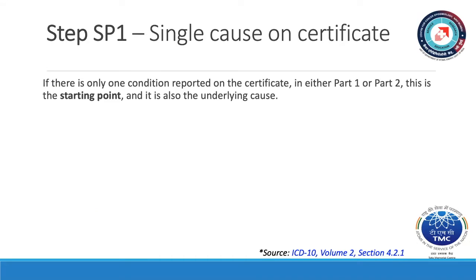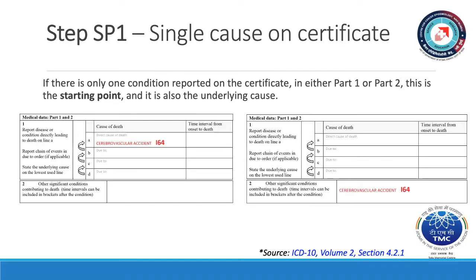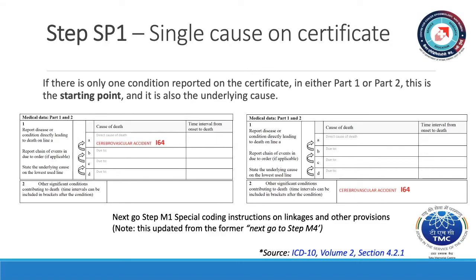Let's start with step SP1: Single Cause on Certificate. If there is only one condition reported on the certificate in either Part 1 or Part 2, this is the starting point, and it is also the underlying cause. Take a look at the examples on the screen. Each example has a single cause on the certificate, either in Part 1 or Part 2. Since you have identified the starting point with step SP1, you can next go to step M1, Special Coding Instructions on Linkages and Other Provisions. Note, this is updated from the former instruction. Next, go to step M4.